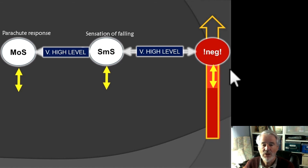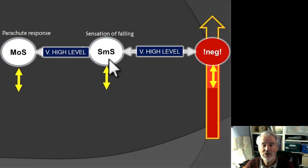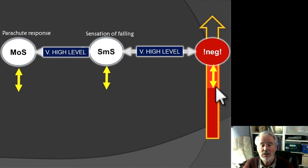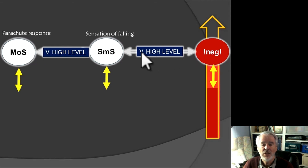The sensation of falling and the parachute response are there because they are associated with a negative value — basically, danger. You don't have to learn this. The baby has this reaction: the sensation of falling, at its already high resting activation level, quickly attains a very intense level, and so does the association with the motor system — very quickly producing an immediate primitive response called the parachute response.